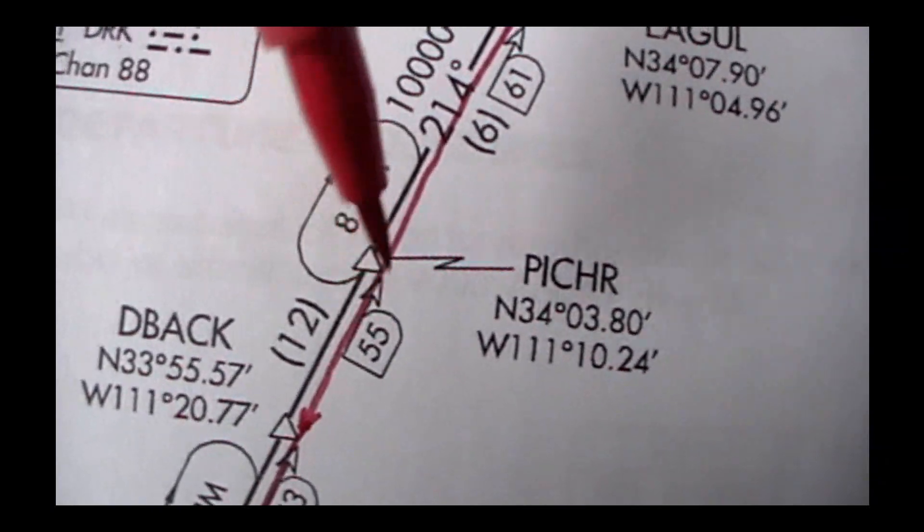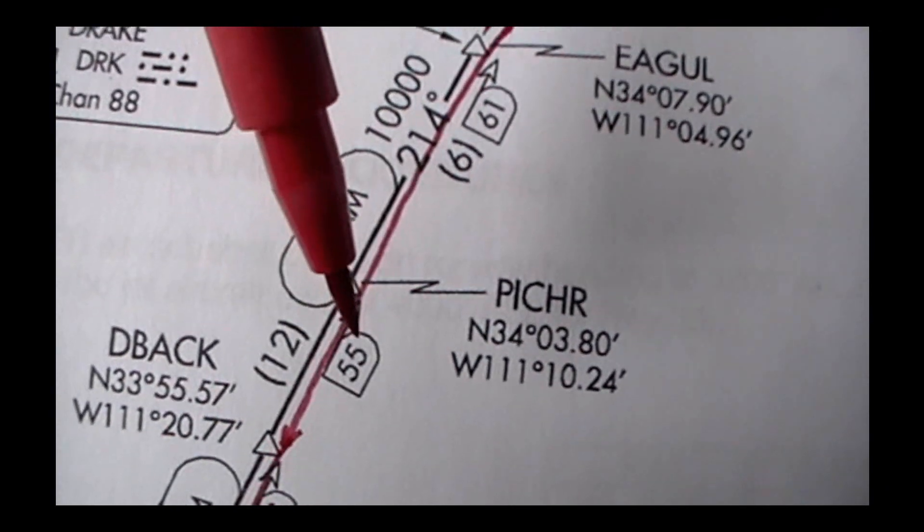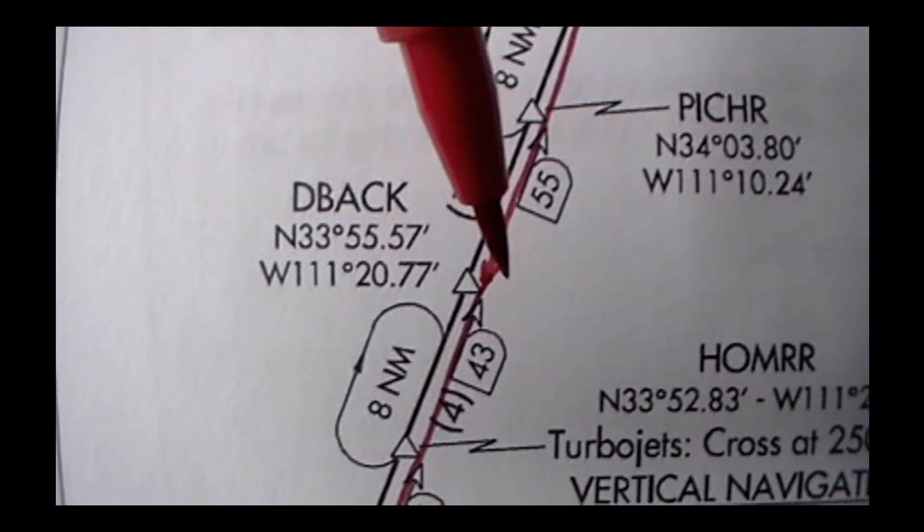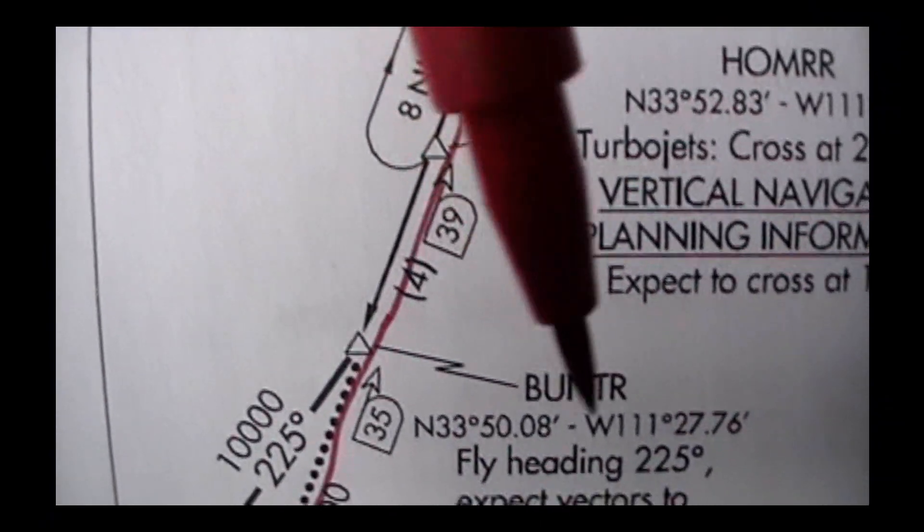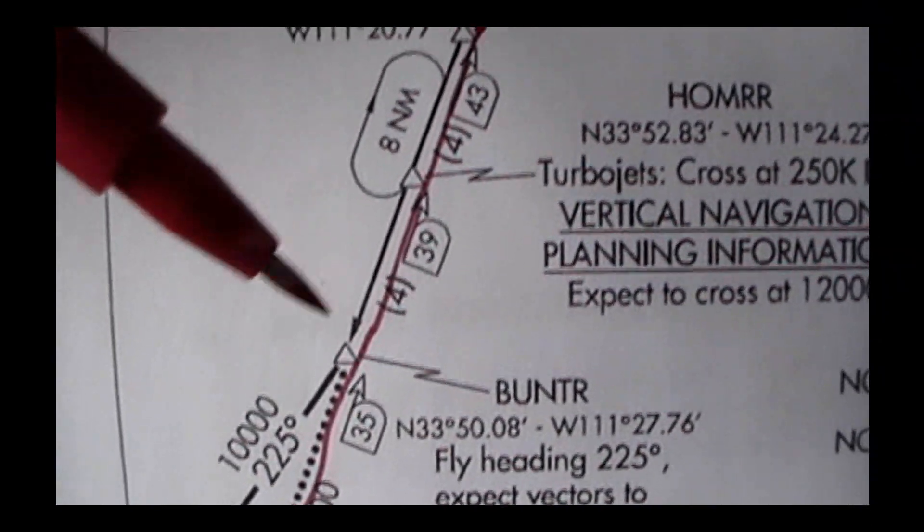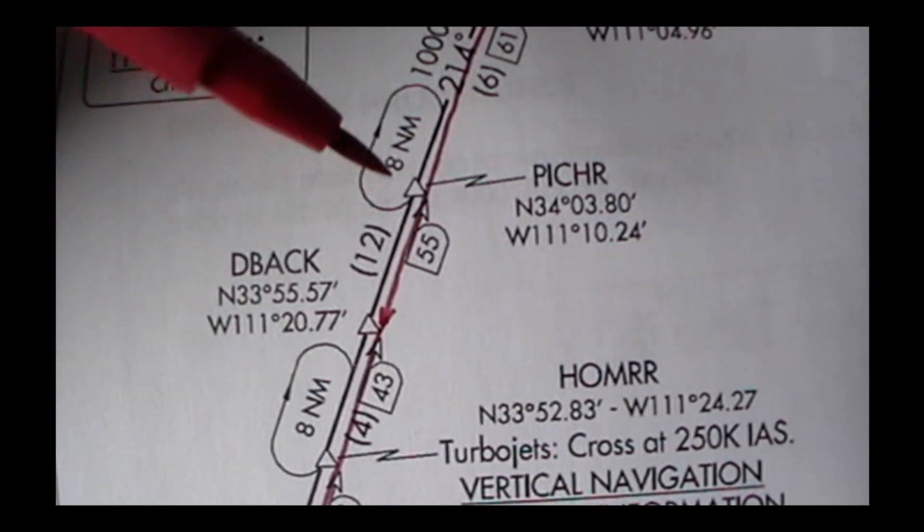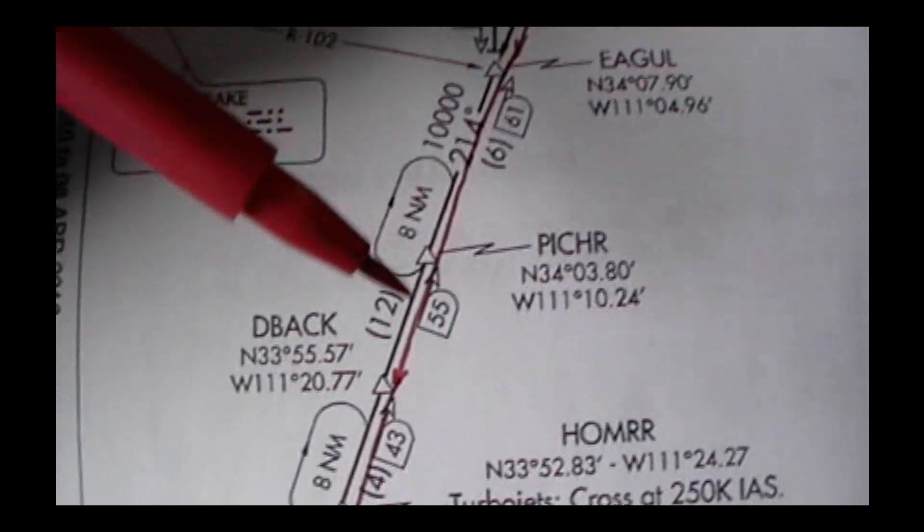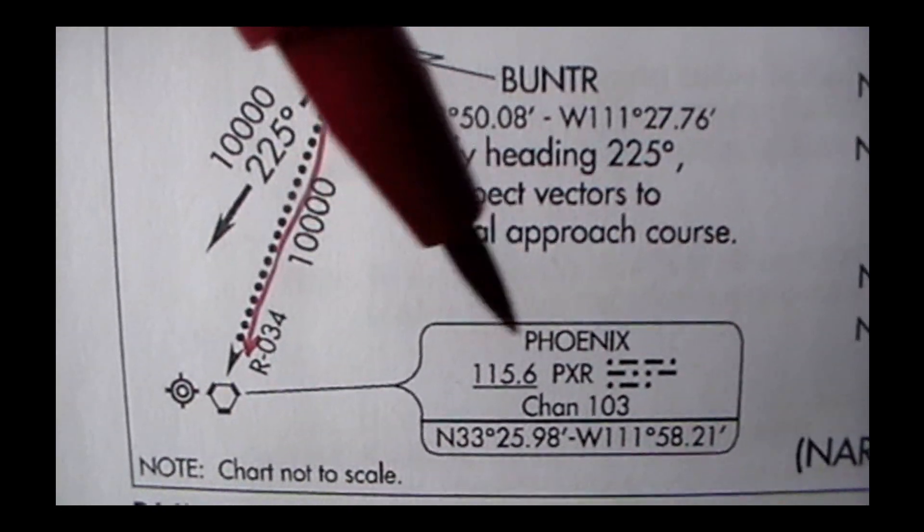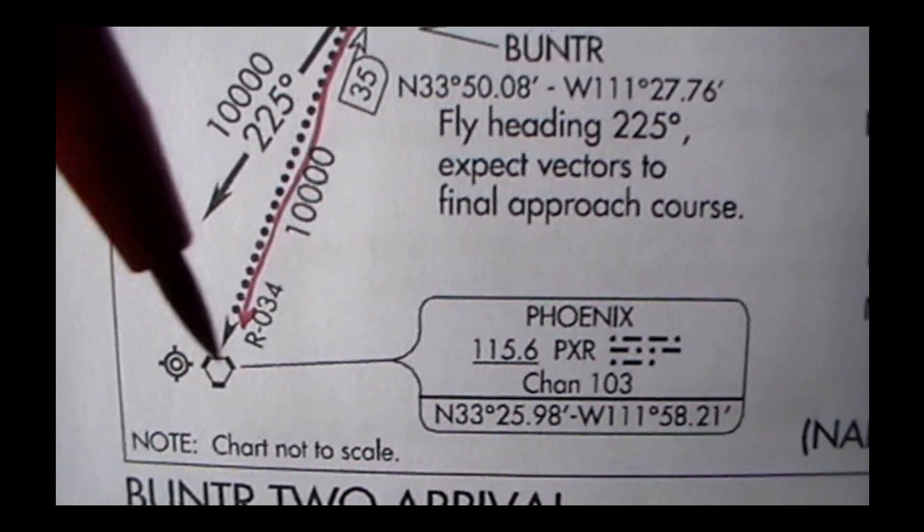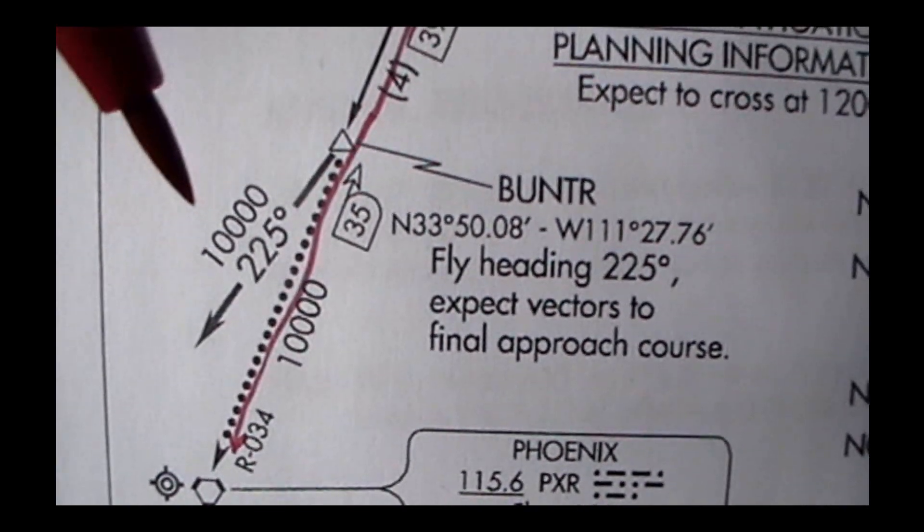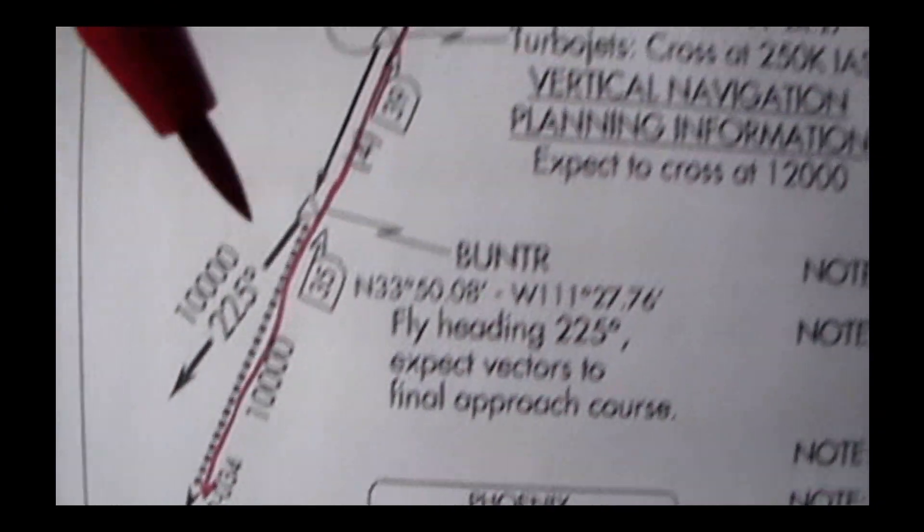The next intersection is PICHR. These numbers here are the opposite direction. So we're heading 214. So 55 is that way. So D-back is the next intersection. So we're getting closer towards BUNTR, which is pretty darn close to Phoenix. So this is the direction that air traffic control would be getting all of these aircraft to fly in a long line towards Phoenix down here. This means that this waypoint here, this waypoint here, this icon is the Phoenix VOR. The frequency is 115.6. And so that brings you close to the Phoenix area. That's how this chart works.